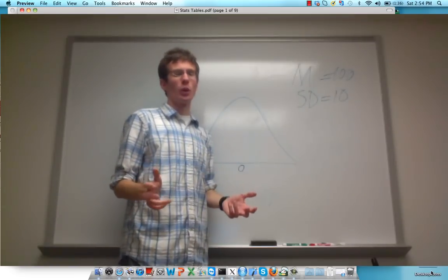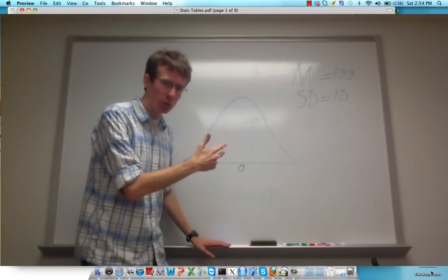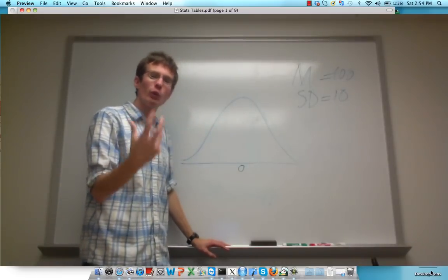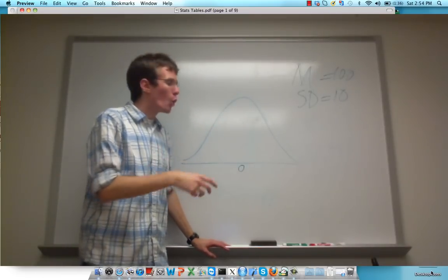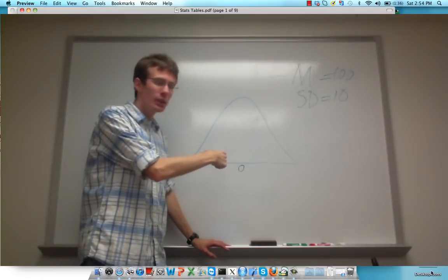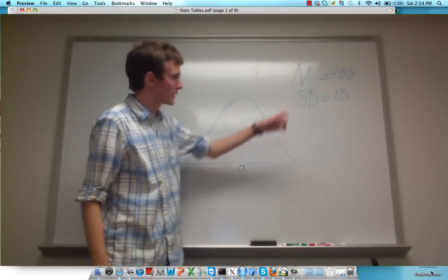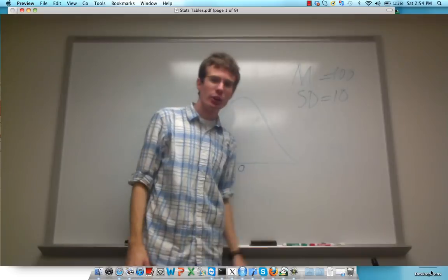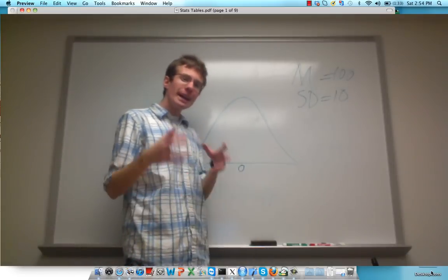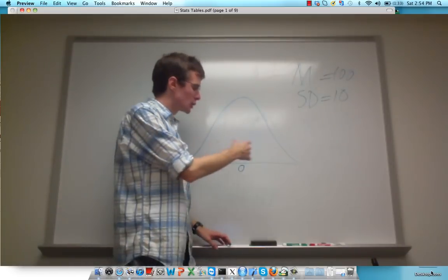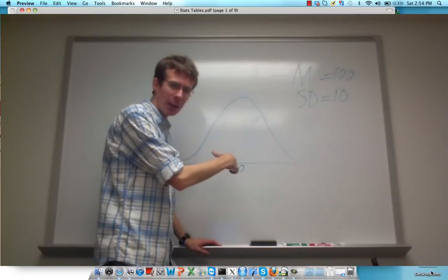Now that we're familiar with z-scores and properties of the normal curve, we can find out what raw scores are associated with different percentiles. Sticking with the example of the IQ distribution, which has a mean of 100 and a standard deviation of 10, we can find out what IQ score is associated with a different percentile.